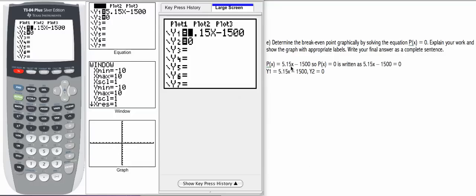We found that to be 5.15x minus 1500. So if we set p of x equal to 0, then we would write 5.15x minus 1500 equals 0. It's the same equation as when we solved algebraically. The difference is now we're going to let y1 equal the left-hand side of the equation and y2 equal the right-hand side.